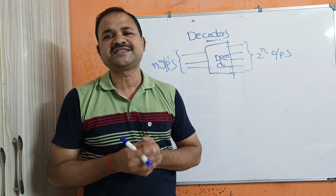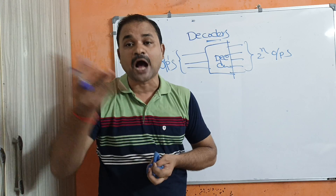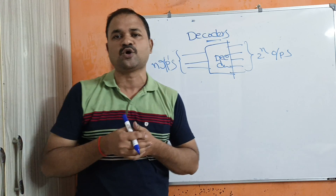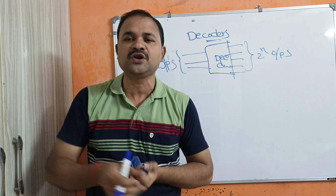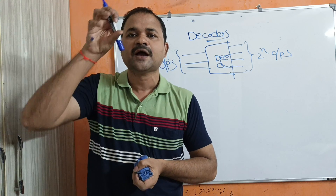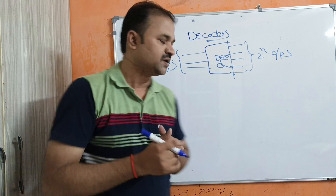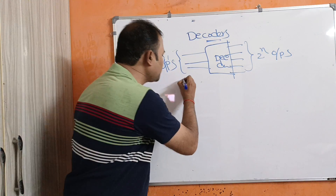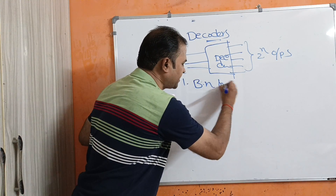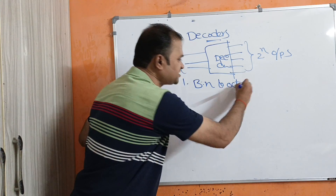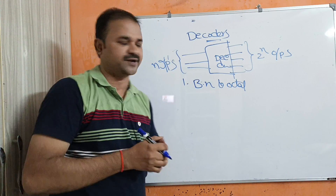Now let us see where we can use a decoder — what is the application of decoder? Decoders are mainly useful in order to convert a binary number into other numbers. For example, we may convert a binary number to an octal number, and in this conversion system we can use the concept of a decoder.